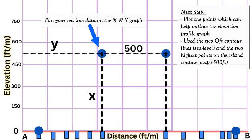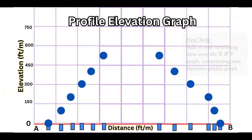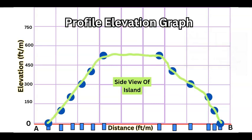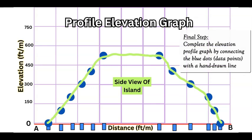When you plot your values for your island based on the red line from A to B, you get a graph that looks something like this with the plotted points for each contour line based on the distance from A to B and the correct elevation. This final step requires you to connect the dots, in this case the blue dots, with a freehand line.